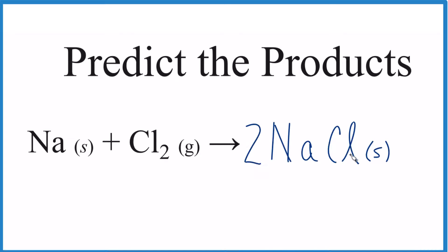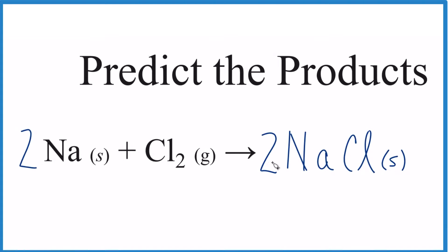So let's put a 2 here, gives us two chlorines. Now we have two sodiums, put a 2 here. So it's balanced. That's the balanced equation.